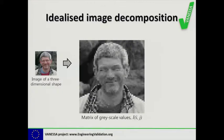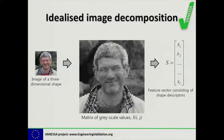Decomposition allows us to fit a set of known polynomials to the values in that matrix and end up with a small number of coefficients. We can group those coefficients in a vector and call that a feature vector, and we could describe those coefficients inside the vector as shape descriptors.